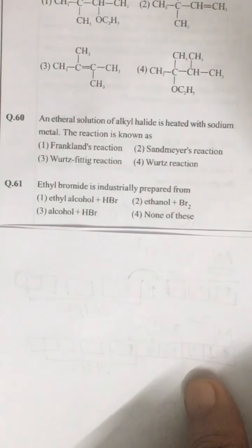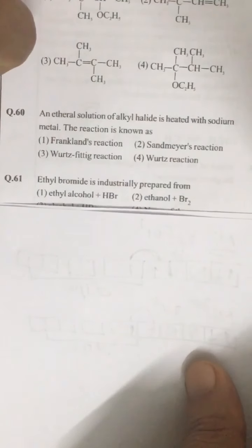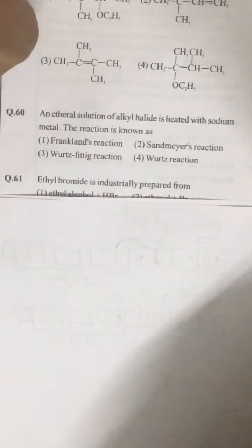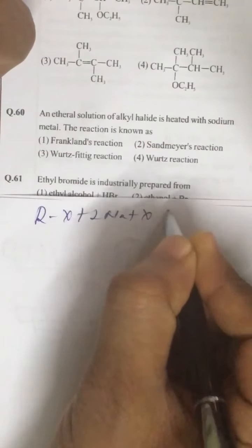Question number 60. An ethereal solution of alkyl halide is heated with sodium metal. The reaction is known as, this is Wurtz reaction. That is RX plus twice of Na plus XR.